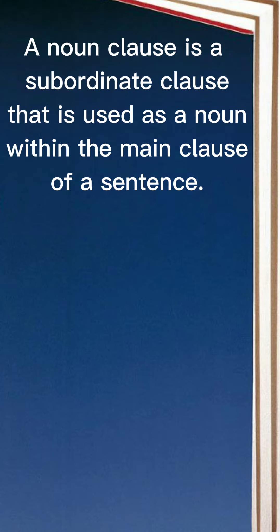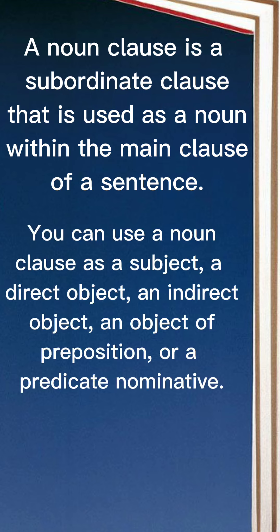A noun clause is a subordinate clause that is used as a noun within the main clause of a sentence. You can use a noun clause as a subject, a direct object, an indirect object, an object of a preposition, or a predicate nominative.